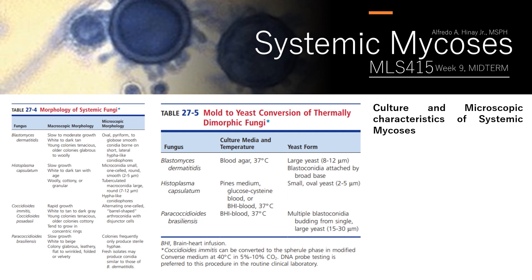For culture and microscopic characteristics of systemic mycosis, refer to tables 27-4 and 27-5 in Mehon. Table 27-4 describes the morphology of systemic fungi specifically in the mold form, while table 27-5 describes the yeast form — it covers conversion of your thermally dimorphic fungi from mold to yeast form.